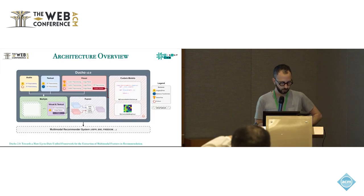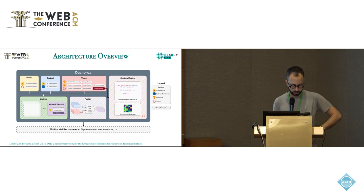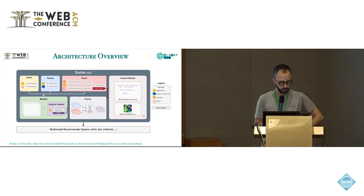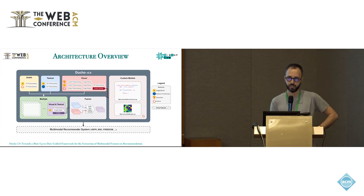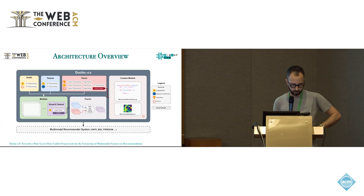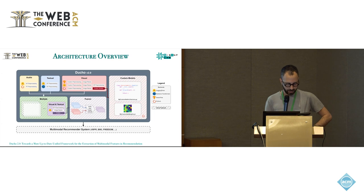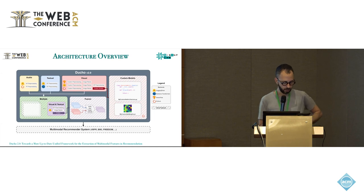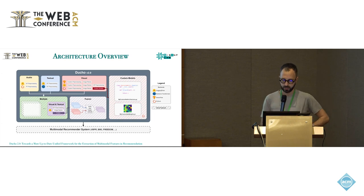The architecture of Duccio 2.0 is designed to be robust and user-friendly. The framework supports multiple libraries including Hugging Face, TensorFlow, and PyTorch. Users can access this functionality through a YAML configuration file. Our GitHub repository includes documentation providing step-by-step guidance on the important points needed to build this configuration file, making it easy to set up and customize the extraction pipeline. Extracted features are serialized in NPY format and serve multimodal recommender systems with a unified perspective for feature extraction.